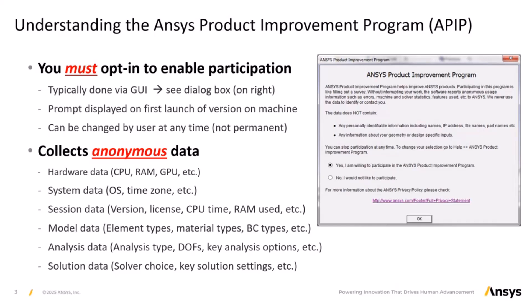APIP collects non-personally identifiable information, including the CPU type, number of processors, available RAM, operating system versions, whether a session is interactive or batch mode, elements and material types, along with analysis and solution data. Most importantly, for the resource prediction tool, APIP collects the total CPU runtime used, total memory consumed, and the disk space used.